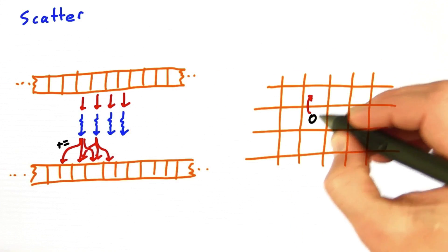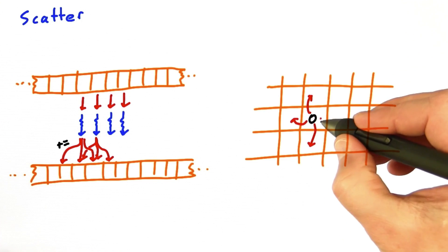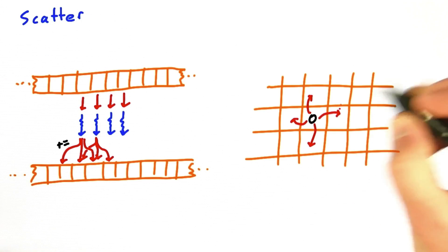You can imagine the same thing on our 2D image blurring example, where each thread takes one input element, or pixel, and writes a fraction of its value to the neighboring pixels.